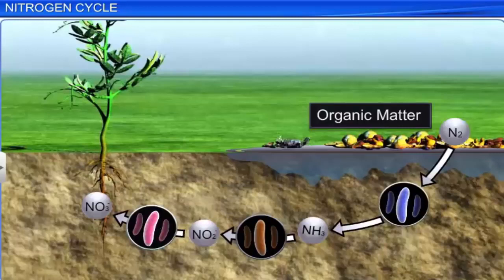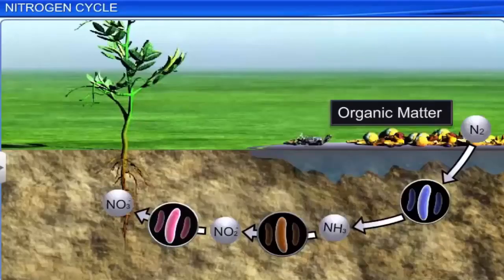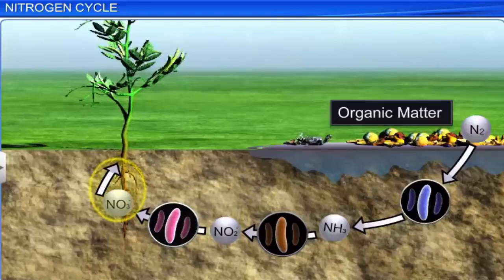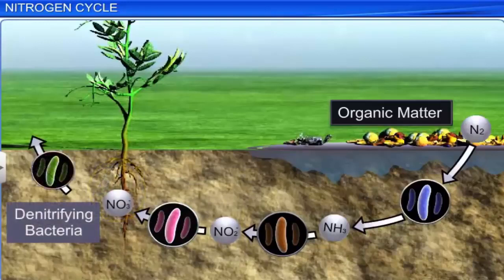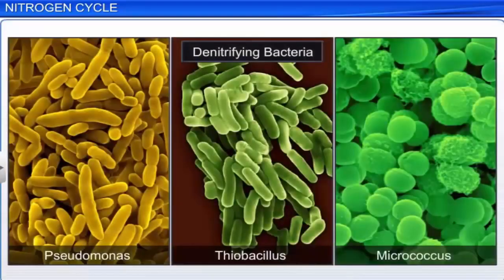During the nitrifying process, chemo-autotrophic bacteria such as nitrosomonas and nitrococcus act on ammonia and oxidize it into nitrite. Nitrites are further oxidized into nitrates by the bacterium nitrobacter. Nitrates in soil are either taken up by plants or are processed by denitrifying bacteria, which release them as elemental nitrogen into the atmosphere. This process is called denitrification. Examples of denitrifying bacteria are Pseudomonas, Thiobacillus, and Micrococcus.